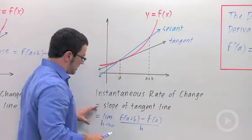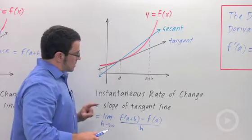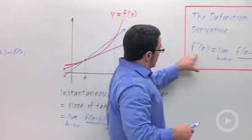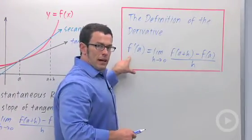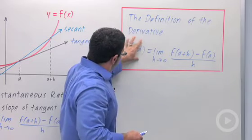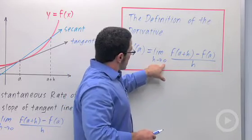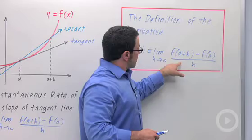This quantity is so important to calculus, it's given a much simpler symbol: f prime of a. This is the derivative of the function f at a. This symbol means the limit as h approaches 0 of f of a plus h minus f of a over h.